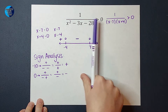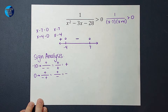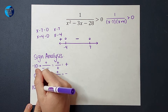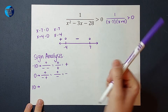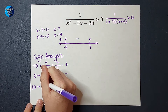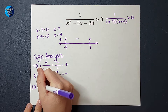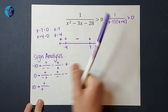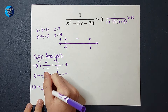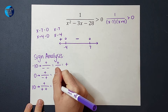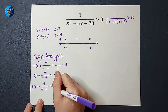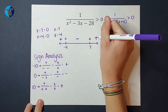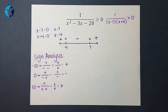Last one — I need to pick a number bigger than seven. I'm just going to pick 10. When I pick 10, the top is still just positive with that one. 10 minus seven is positive, 10 plus four is positive, and all those positives are going to end up being positive.